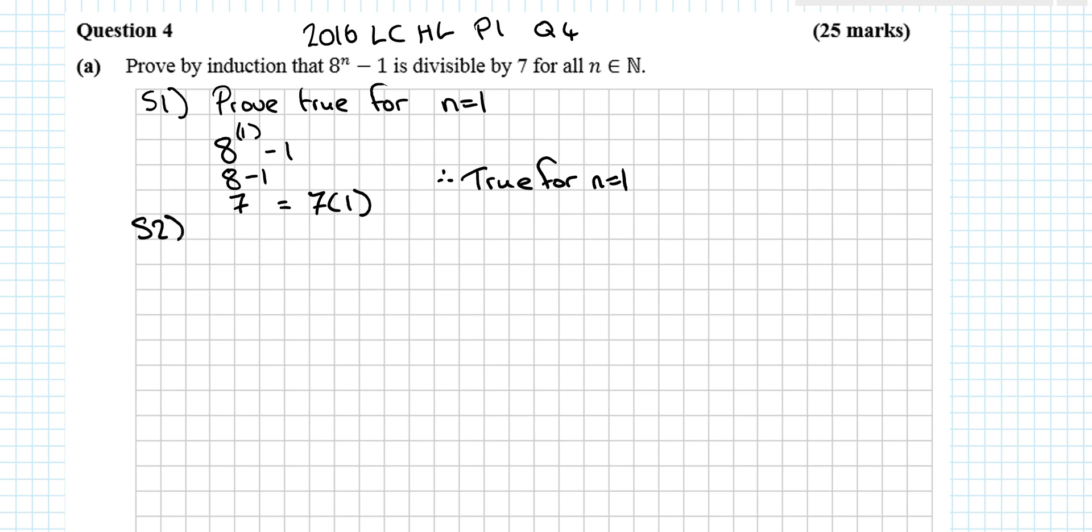Step 2. Assume true for n equals k. So how do we actually do the assumption here? Well, if this is divisible by 7, it must be able to be written as 7 times some number. Think about any number that you think is divisible by 7: 42, 49, 35, any of them could be written as 7 times some number. And we call that some number a in this case.